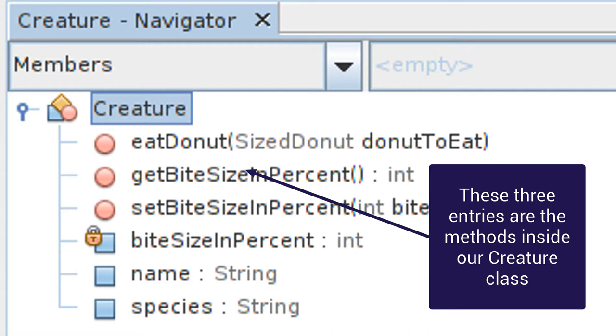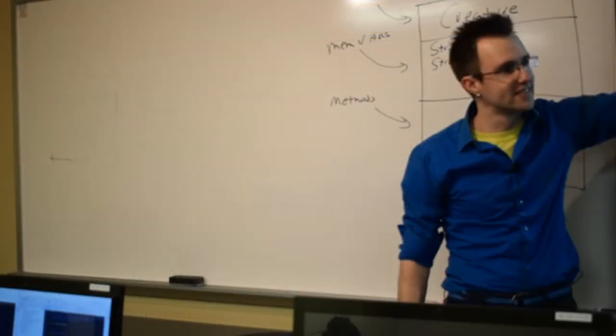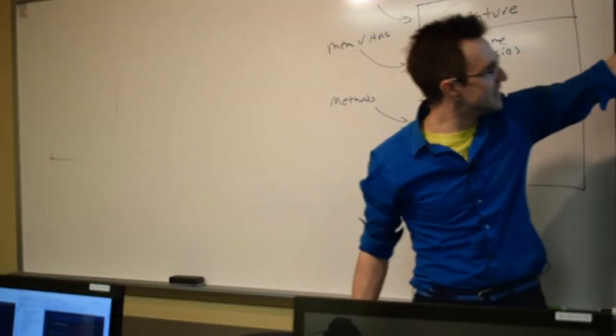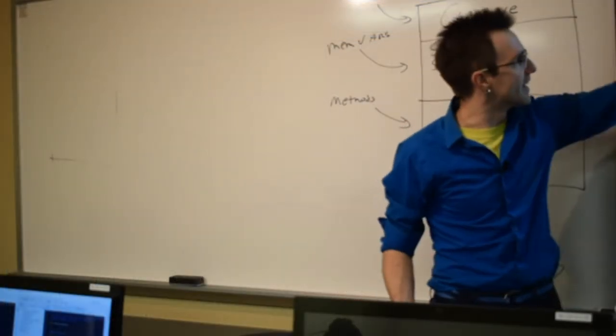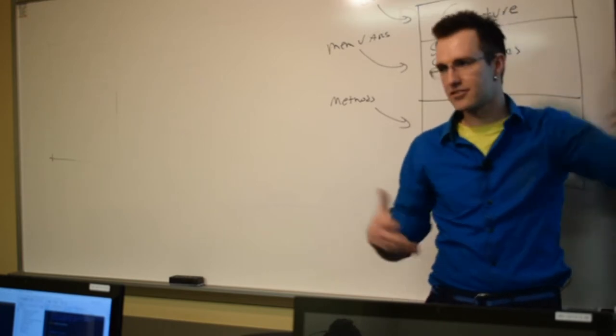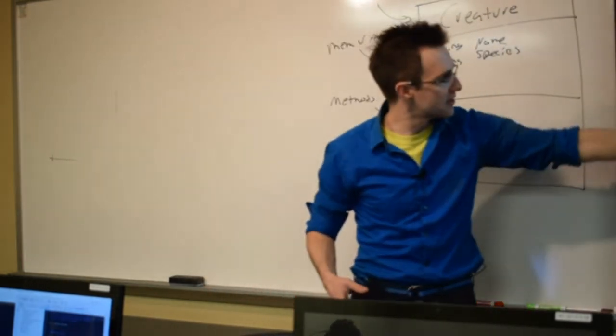Yes, because their names are what? What they do. Yes, what they do. Eat Donut. That's an action. Get Bite Size in Percent. That's something that we would do with the object. Member Variables are here. Now, I want to do a quick review. Some of these have a little lock. Why did it do a lock? Private. Private.